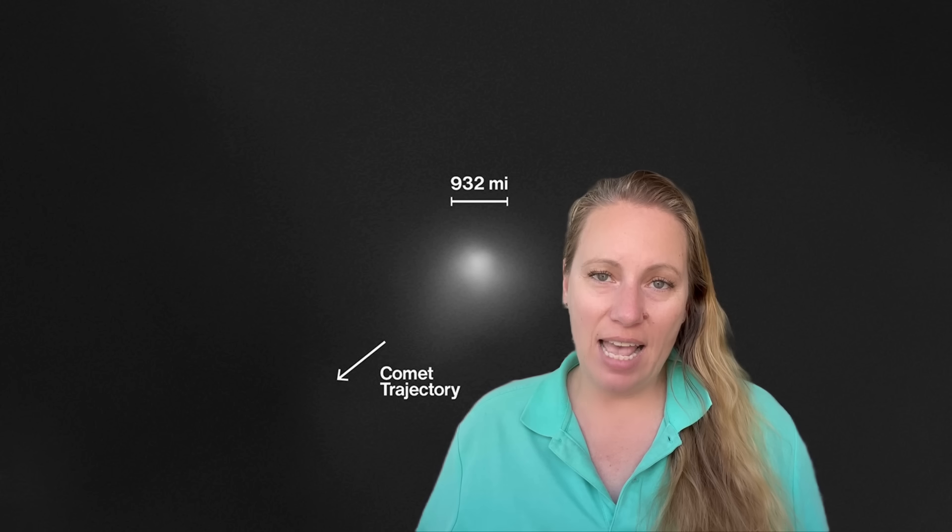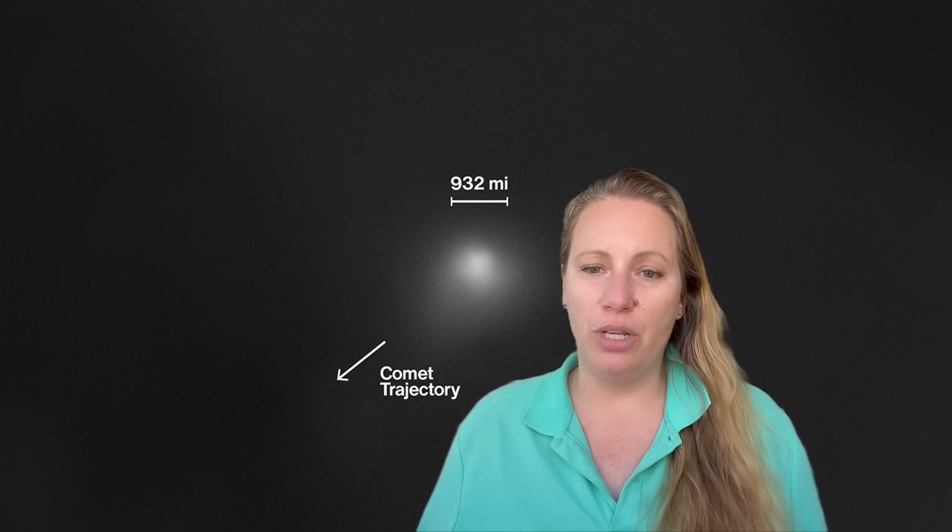So what has really changed as 3i Atlas is approaching Earth? Well, the only real change is from our perspective. Our perspective has shifted. As the Earth, 3i Atlas and the Sun are moving, their geometry changes constantly. This alters the contrast, the apparent length, and the brightness distribution. But the underlying structure remains.